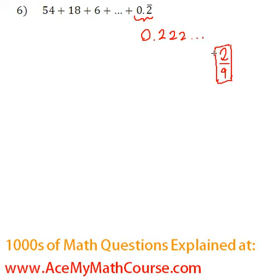If you have problems finding out why that's 2 over 9, I recommend you take a look at our infinite geometric series section on our website. But for now, let's just accept it's 2 over 9 and use the sum formula with the last term formula.